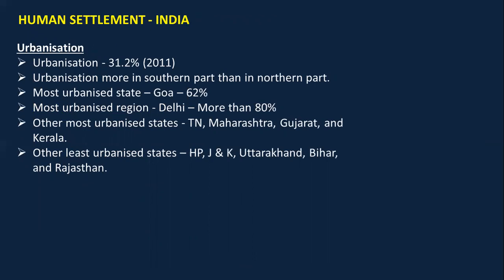In this chapter we also talk about urbanization — the total percentage of population living in urban areas. India's urbanization is 31.2% according to the 2011 census. Urbanization is more in the southern part of India than in the northern part. The most urbanized state of India is Goa — important for objectives and map marking. The most urbanized region is Delhi.